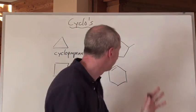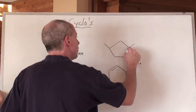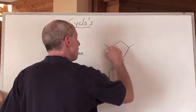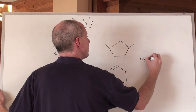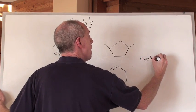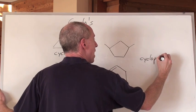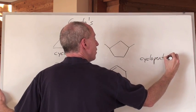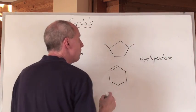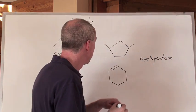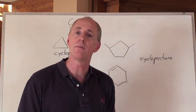That's one, two, three, four, five in the cyclo — so that's cyclo-pent — single bonds — cyclopentane. But look, that's a methyl branch and a methyl branch coming off.